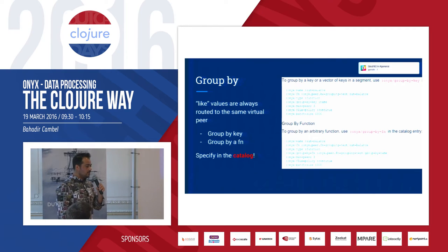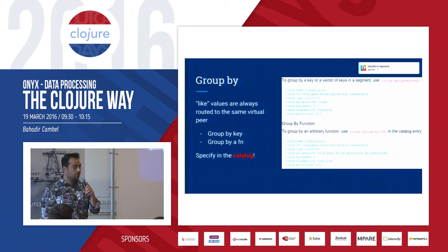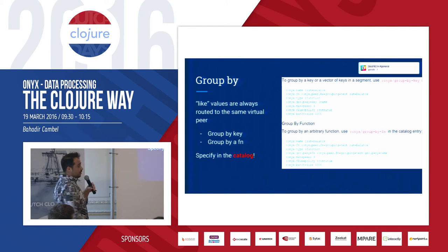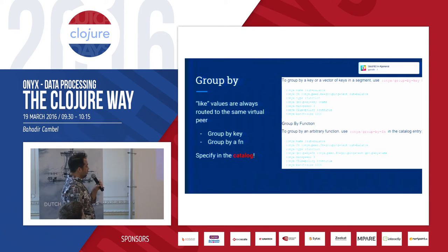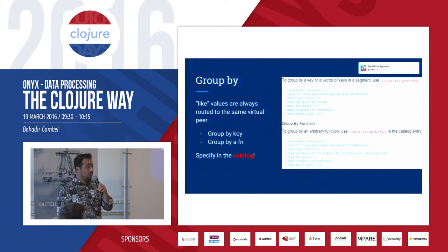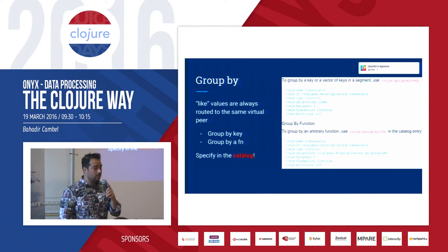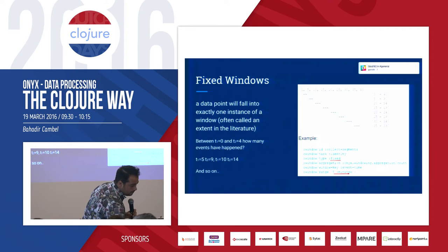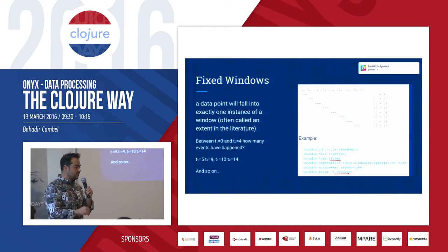In the word count example, we group to count by the keyword 'word'. You can use a key — in this case the group-by key name is the word — or you can call a function whose output will be the aggregation key.